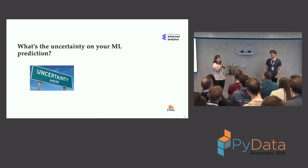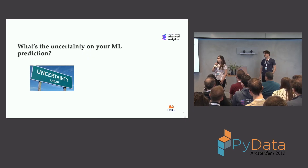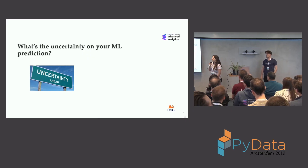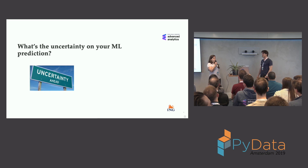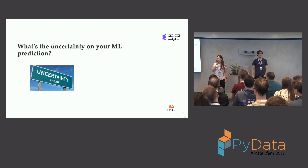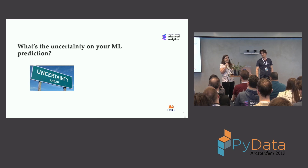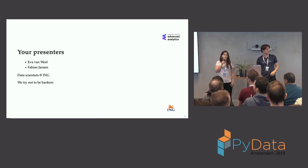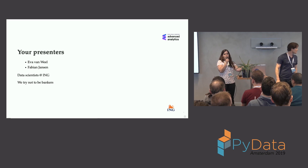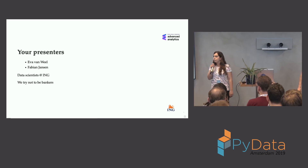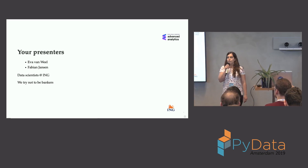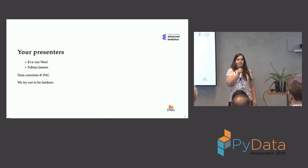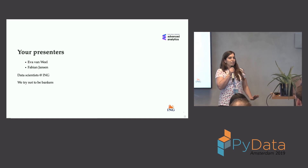Good afternoon everybody, it's great to see so many faces today. We'll talk about what's the uncertainty on your machine learning predictions. But before we go into that, let's give a brief introduction about ourselves. This is Fabian Janssen, my name is Eva van Wil. We're two data scientists working at ING.